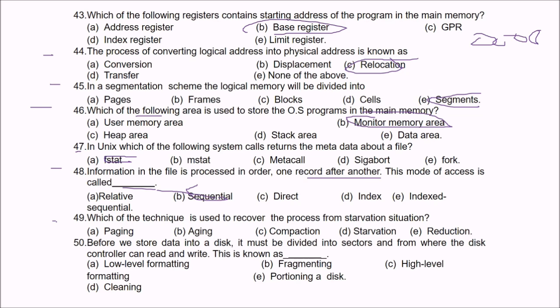Question 49: Which technique is used to recover a process from a starvation situation? The answer is aging — if you provide aging, the process will not starve.